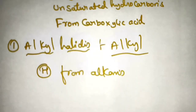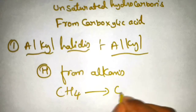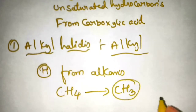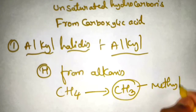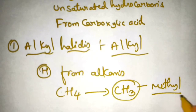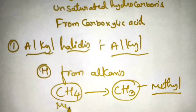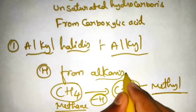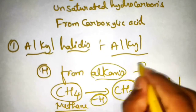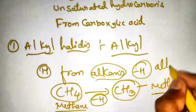For example, you have CH4. From this, if you remove one hydrogen, then it will become CH3. So what is this CH3? It is called methyl. It is also called an alkyl group, otherwise methyl. So this CH4 is methane. From methane, you have removed one hydrogen, so it gets converted into the methyl group. From alkanes, if you remove a hydrogen atom, then it will become an alkyl group.